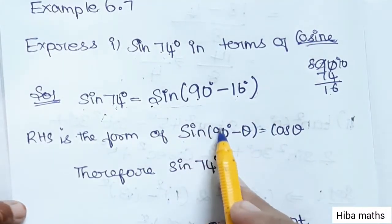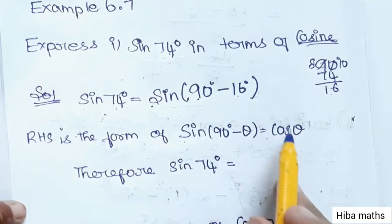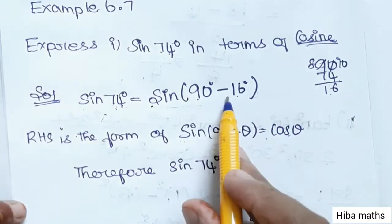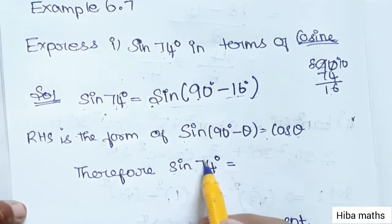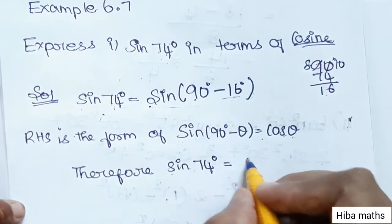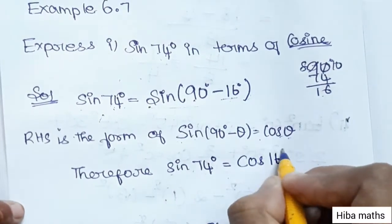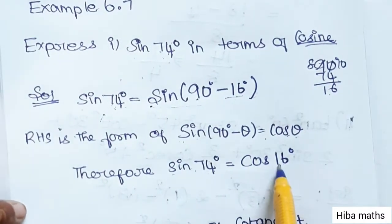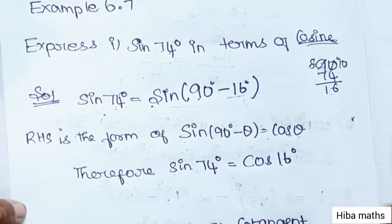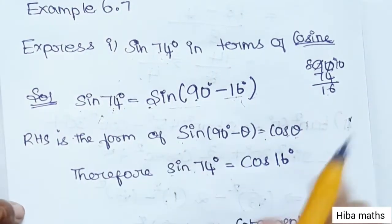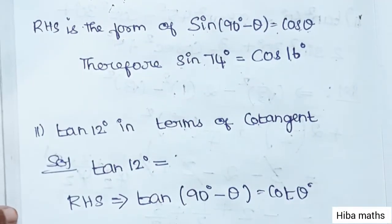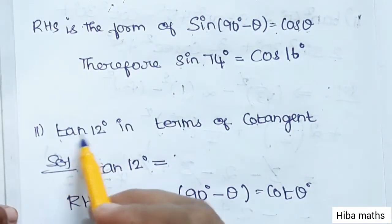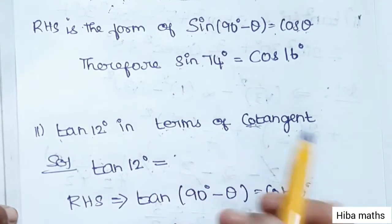So sin 74 degree is equal to cosine 16 degree. So sin 50 degree is equal to cosine 40 degree.